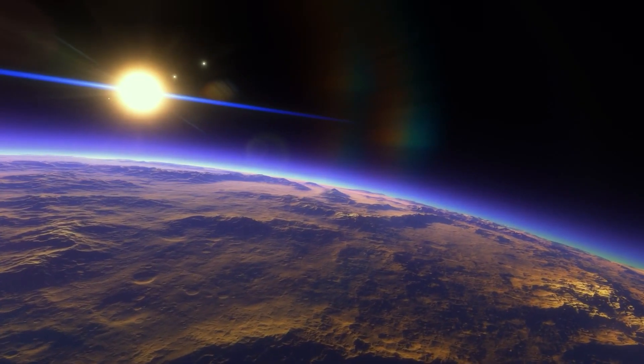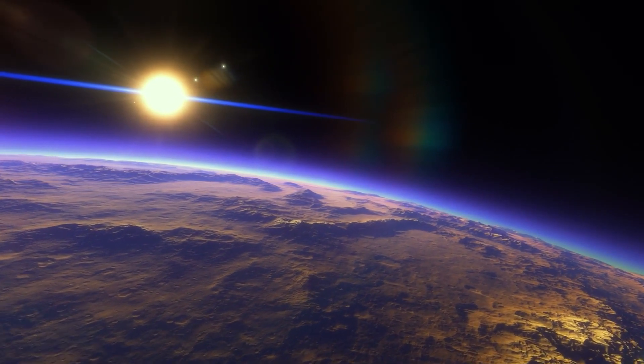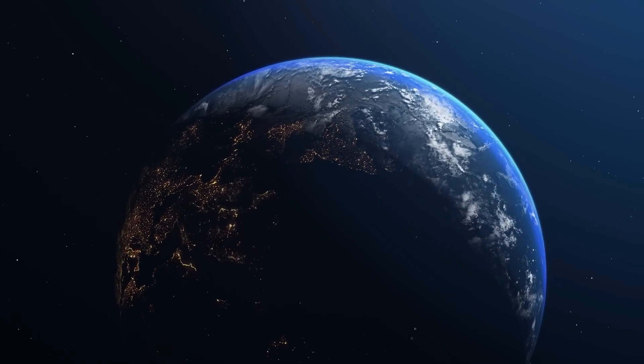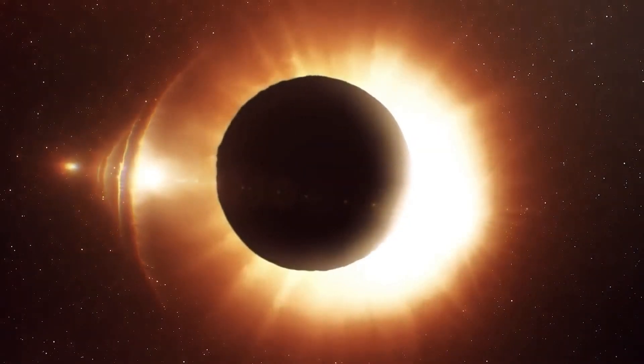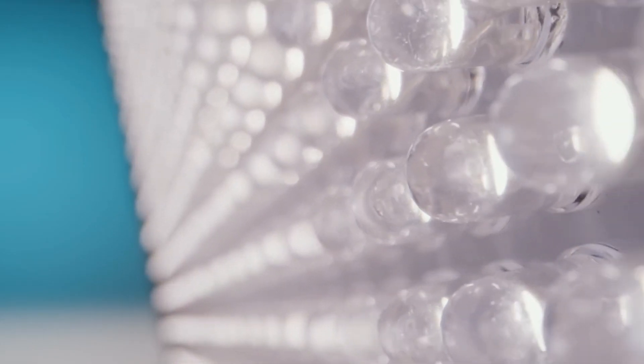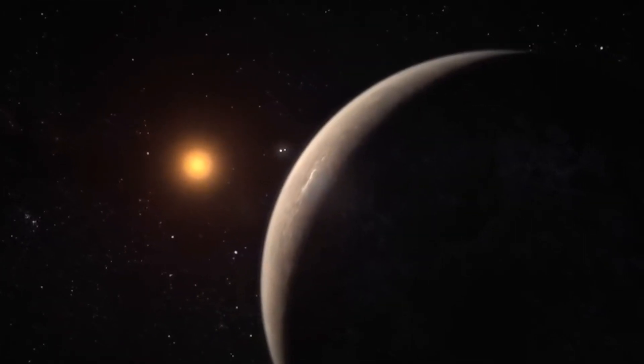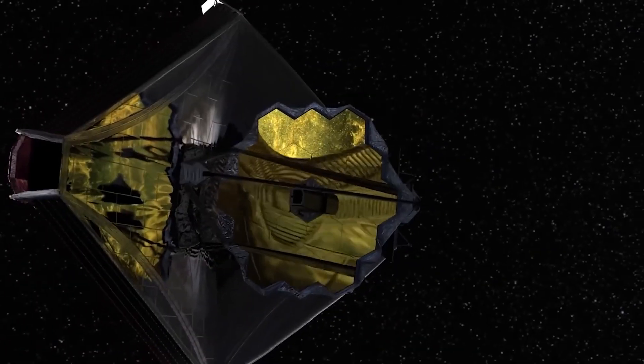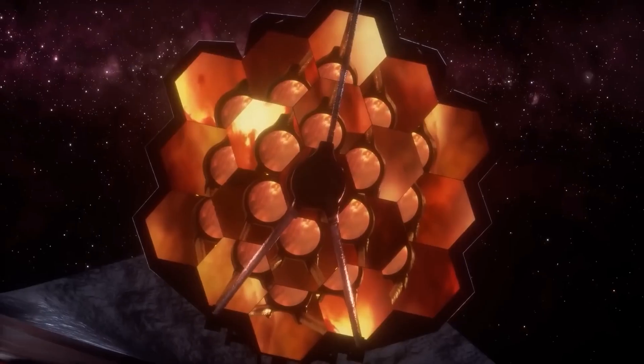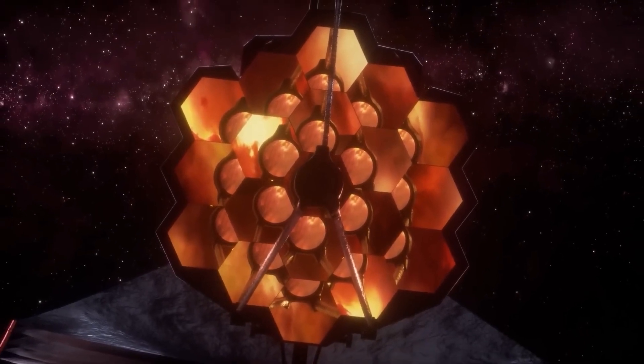Proxima b orbits so closely to its host star that it has become tidally locked. It is the dark half of the planet that is most likely to host intelligent life. For that to be possible, it must have really invested in its lighting infrastructure. Another hypothesis is that very bright orbital mirrors could be used to reflect light onto the night side of the planet. If this were so, it would be seen by our telescopes.